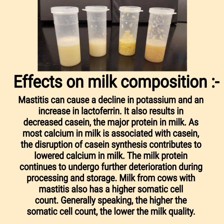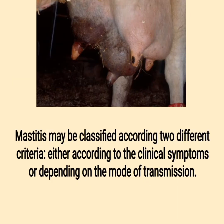Mastitis can cause a decline in potassium and an increase in lactoferrin. It also results in decreased casein, the major protein in milk. As most calcium in milk is associated with casein, the disruption of casein synthesis contributes to lowered calcium in milk. The milk protein continues to undergo further deterioration during processing and storage. Milk from cows with mastitis also has a higher somatic cell count; generally speaking, the higher the somatic cell count, the lower the milk quality.